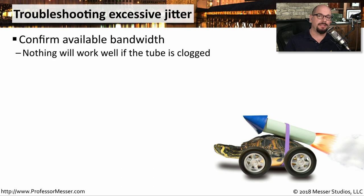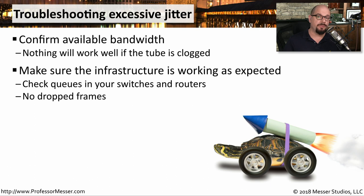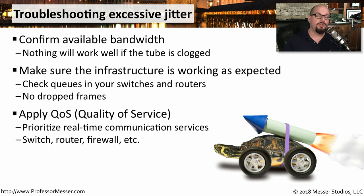It can be challenging to troubleshoot excessive jitter on your network. The first thing you might want to look at is how much bandwidth is available. If you're using an excessive amount of bandwidth on your internet connection, it will be challenging to receive real-time information at regular intervals. Your switches and routers can also contribute to jitter — we want to be sure none of those devices are queuing up information, have excessive congestion, or are dropping frames. In many environments, you apply quality of service so that a large file transfer won't affect any of your real-time communication.